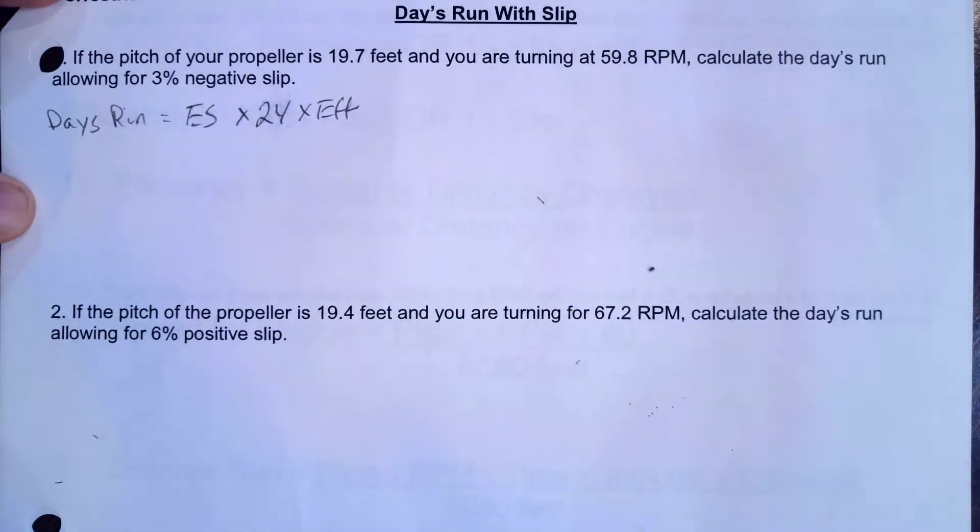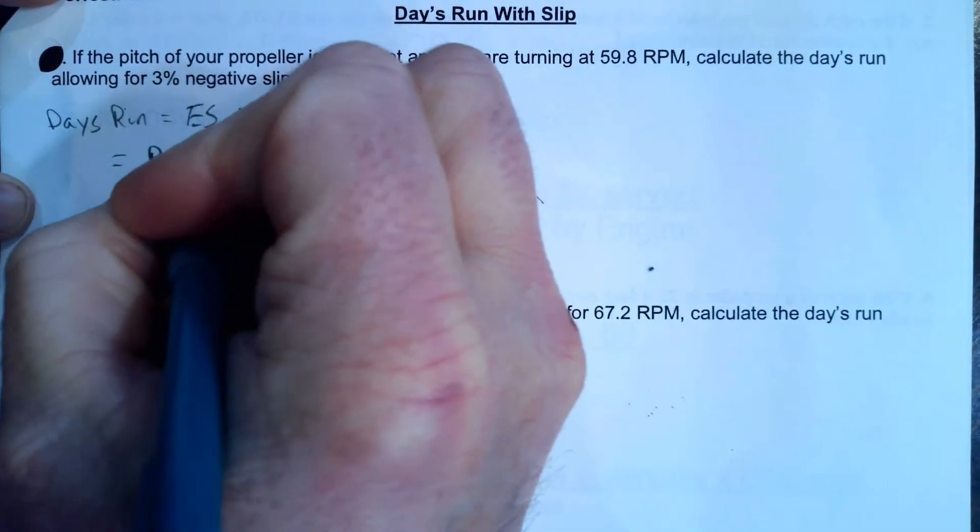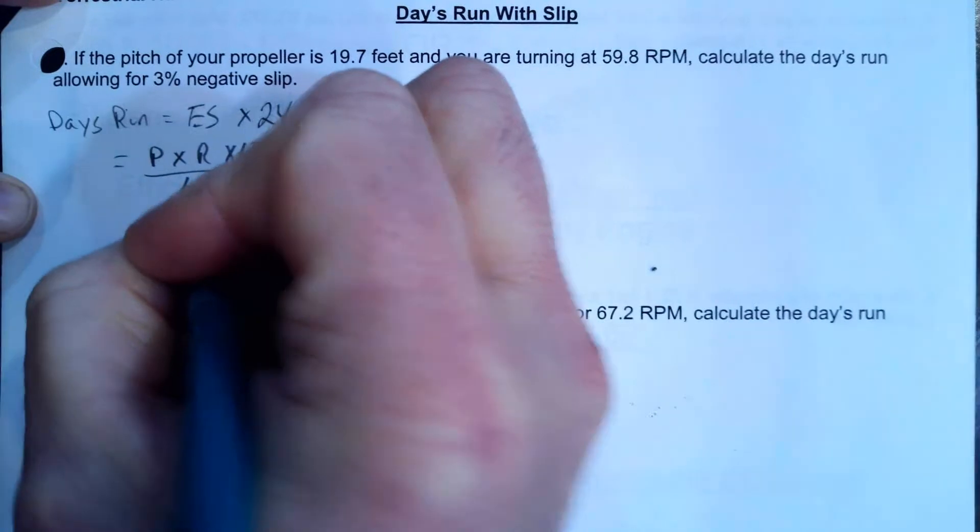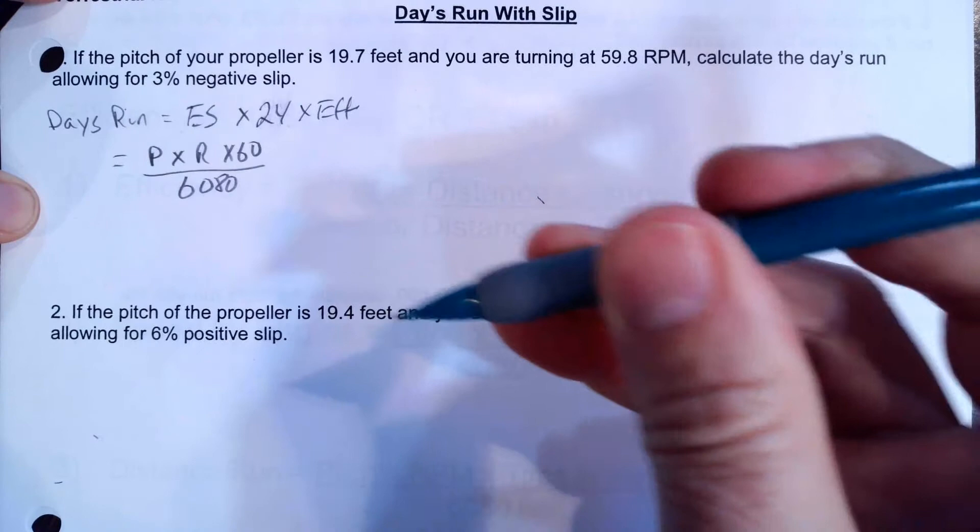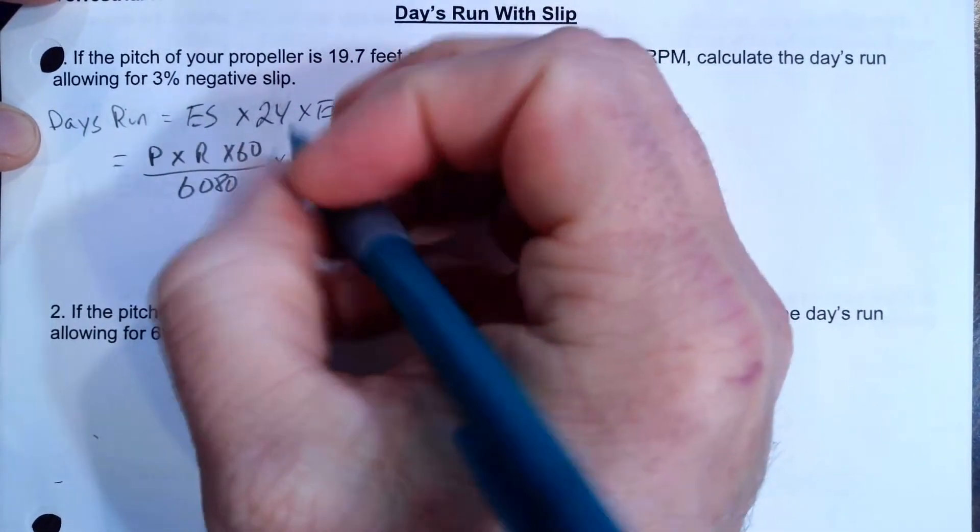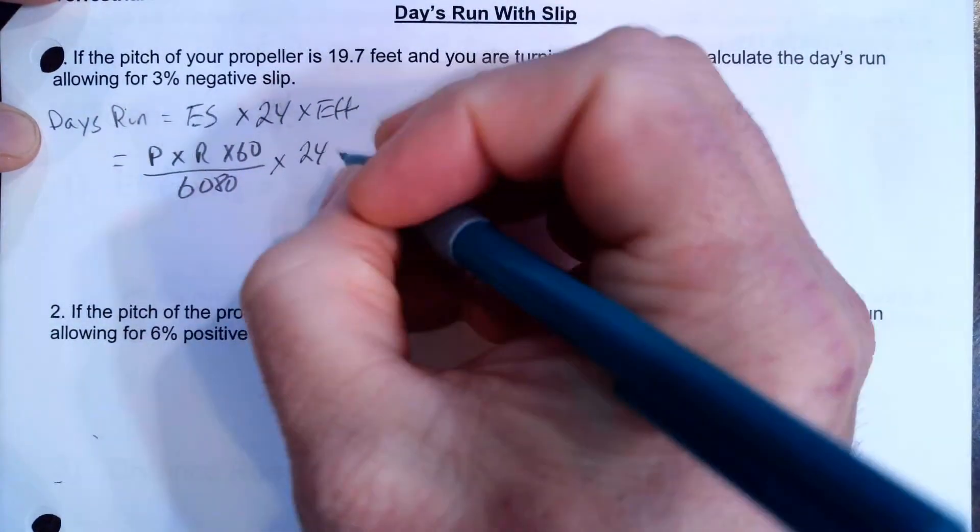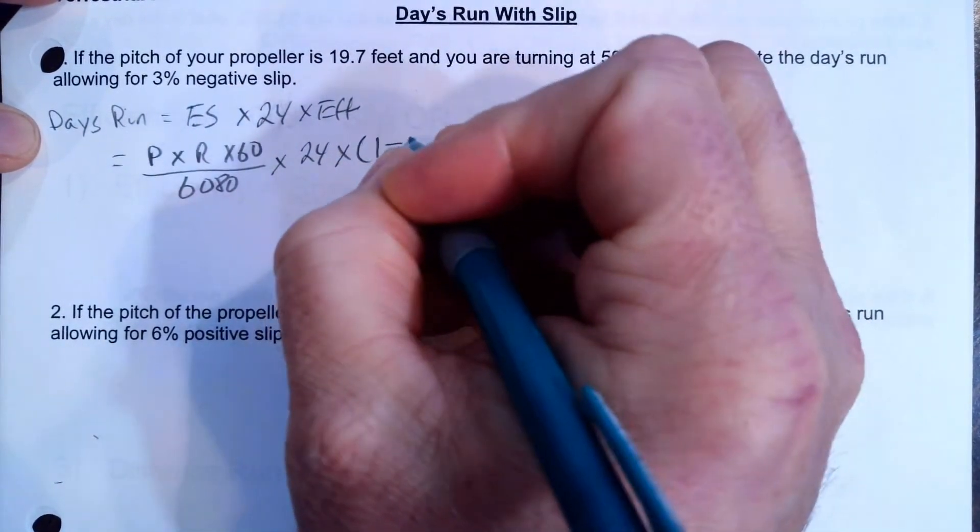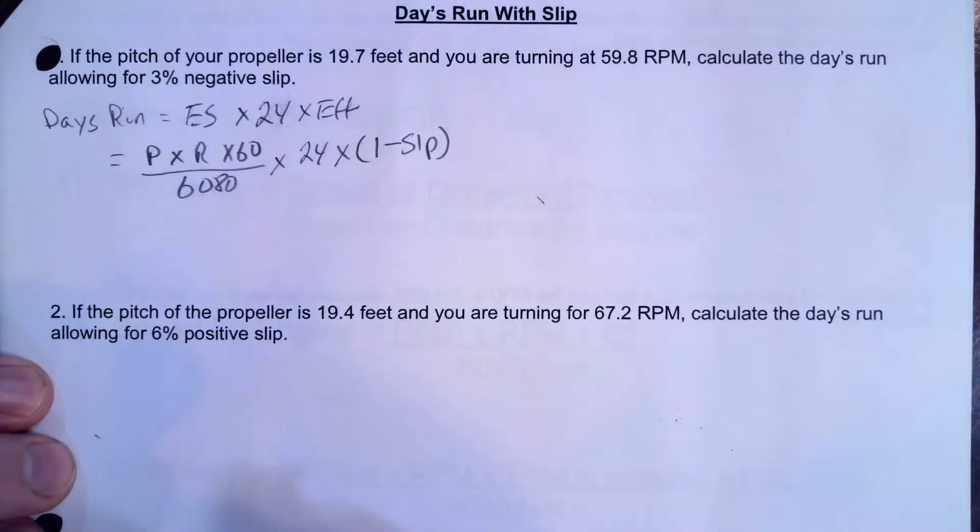So how is that whole formula going to look for us? Well, engine speed is pitch times RPM times 60 over 6080. So that's a formula that hopefully you already know. And I'm going to convert that to nautical miles per hour, and I'm going to convert that to a day by multiplying by 24 hours. And then I have to actually put my efficiency in there, which is going to be 1 minus the slip. So that is the super formula that I'm going to use to calculate this.